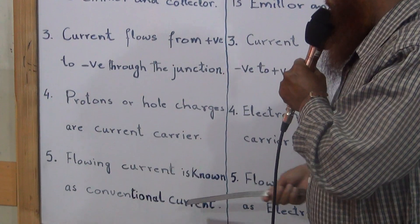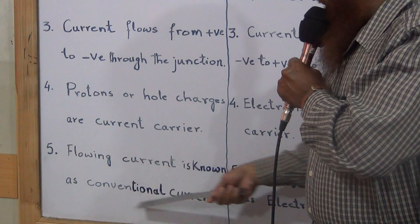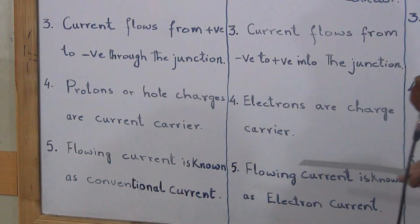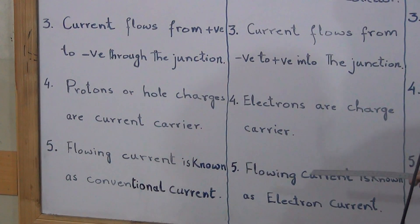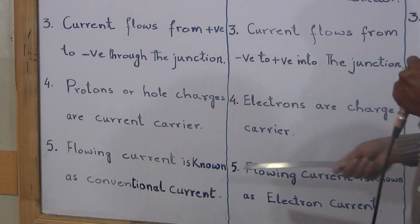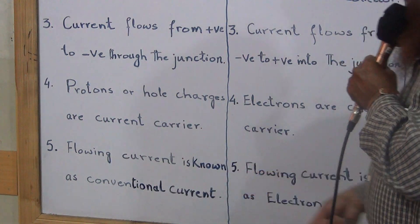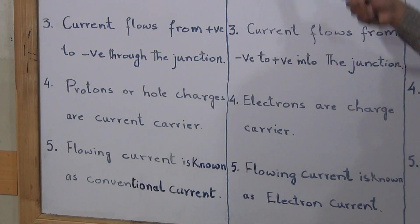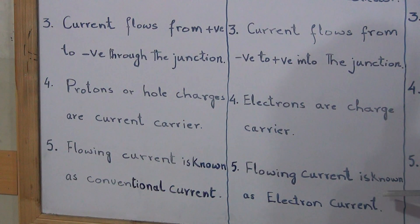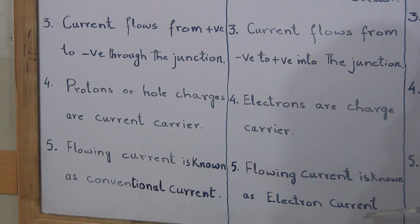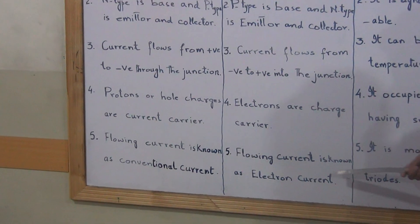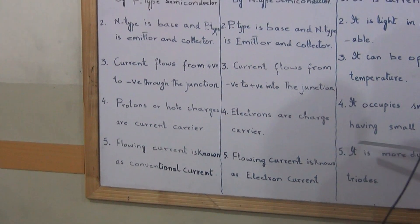Number 5: In PNP transistor, the flowing current is known as conventional current — the current which flows from positive to negative. In NPN transistor, the flowing current is known as electron current, meaning electrons flow towards the protons.